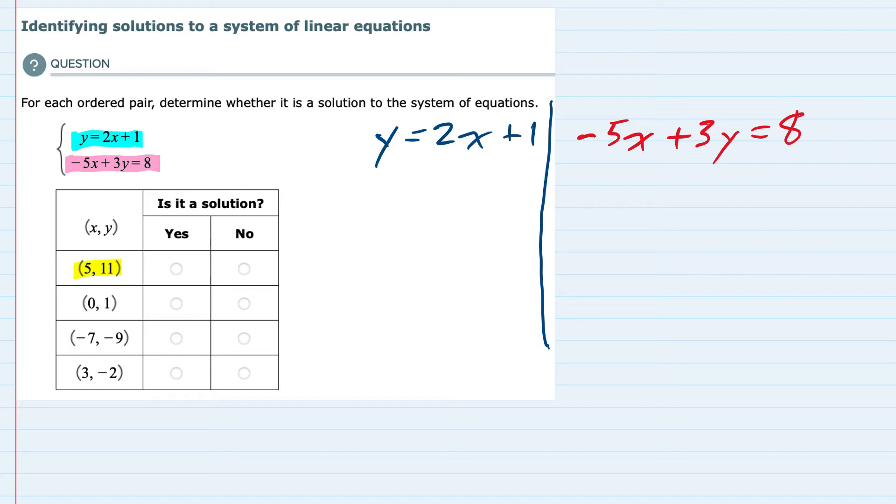So starting with (5, 11), in this case the 5 is the x and the 11 is y. I'm going to plug those into the first equation. y is 11 and x would be 5 to see whether or not that works. The left hand side is 11. On the right hand side I have 2 times 5 is 10 plus 1 is 11.